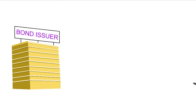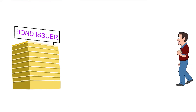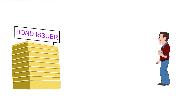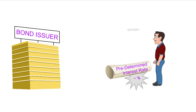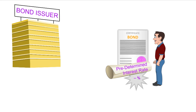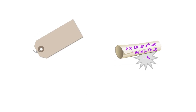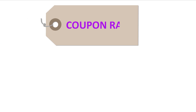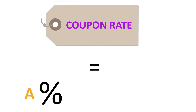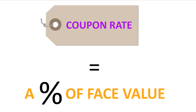Mudra learns that the coupon rate, also called the nominal yield of a bond, is simply the predetermined interest rate that the bond issuer offers to investors. It is calculated as a percentage of the face value of a bond.